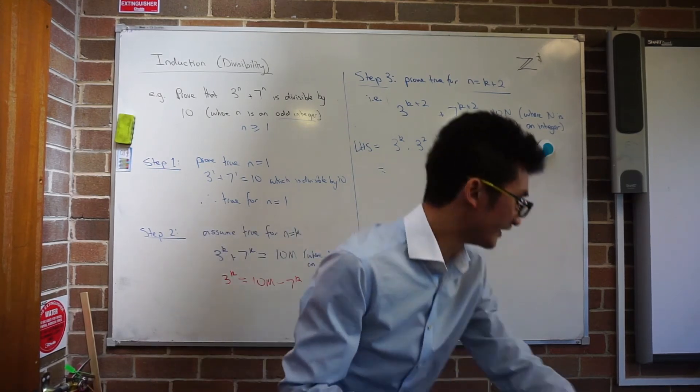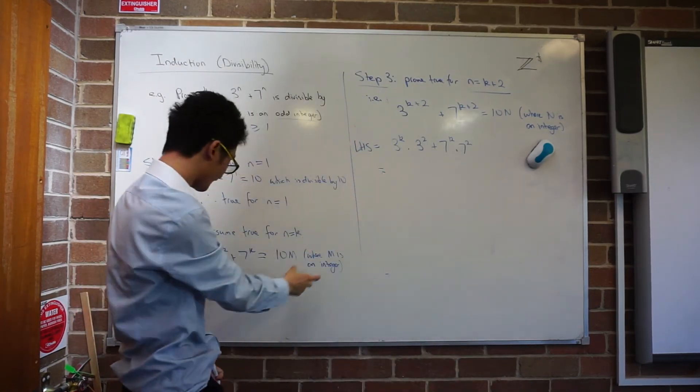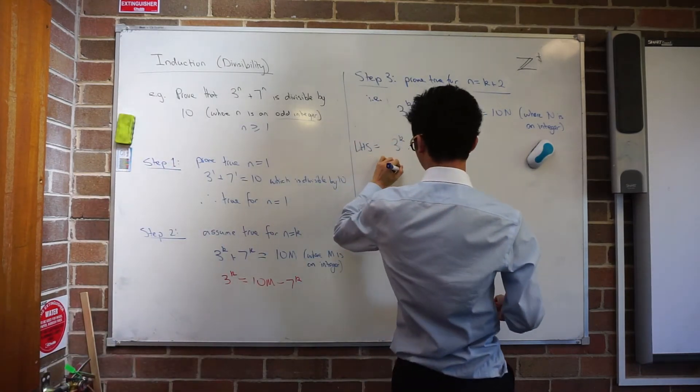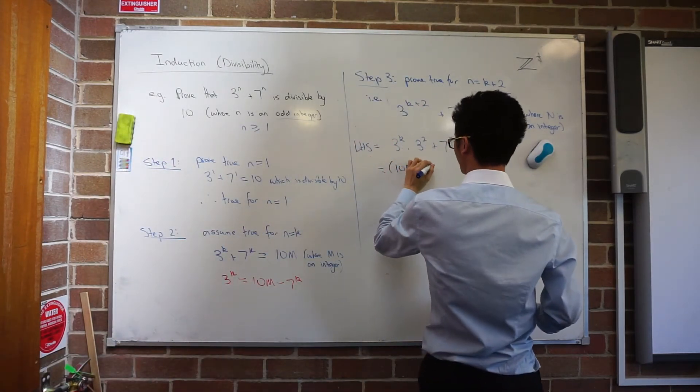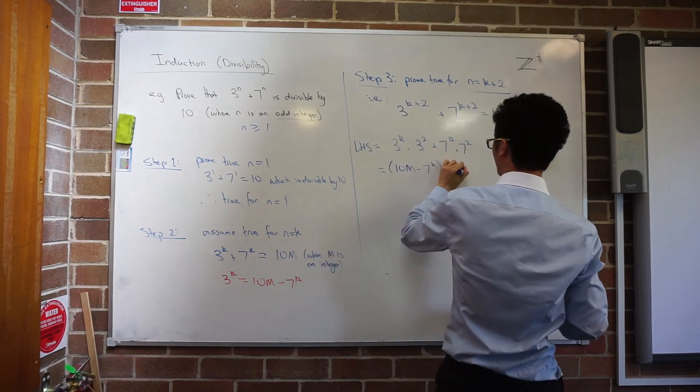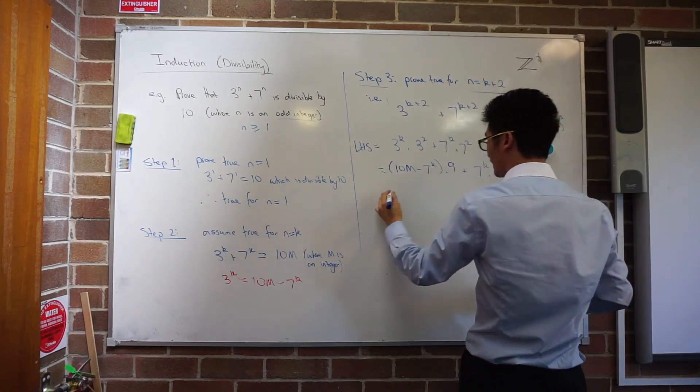Can I find 3 to the k anywhere in there? Yeah. Where? First one. Alright, the first one. So instead of 3 to the k, I'll write 10m minus 7 to the k. Just going to replace it. Times, so I'm going to just rewrite 3 squared as 9 plus 7 to the k and 7 squared as 49.